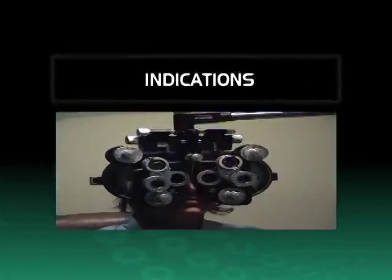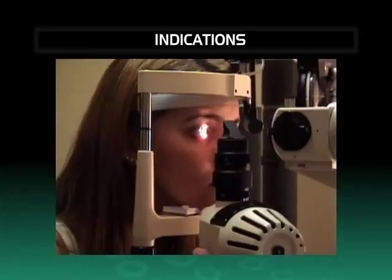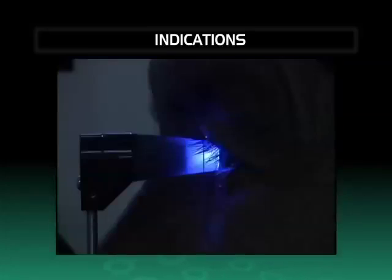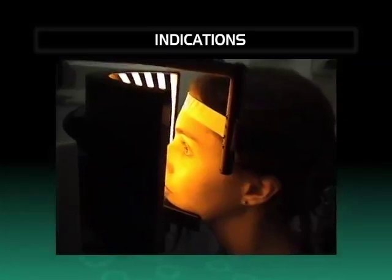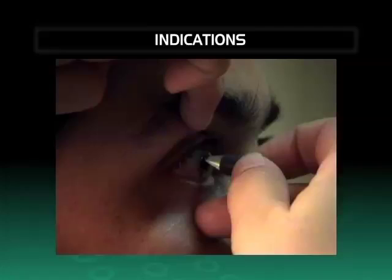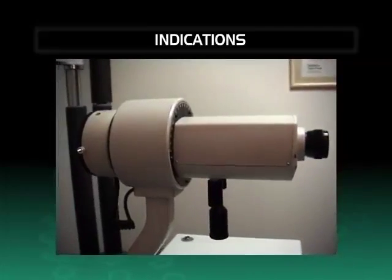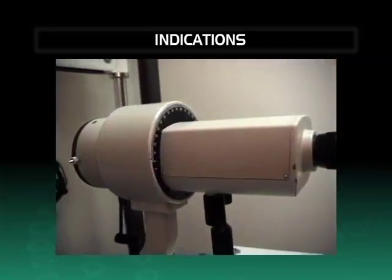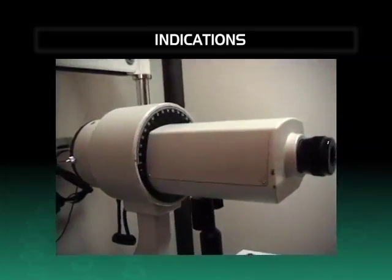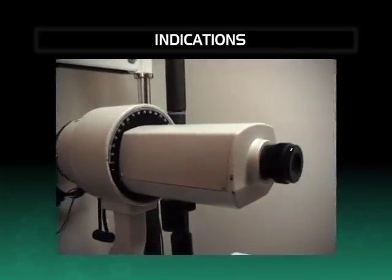Indications: Correct indication for Cararing implantation requires complete ophthalmological examination in addition to corneal topography, pachymetry, and subjective manifest refraction. In general, Cararing implantation may be considered in the following cases.